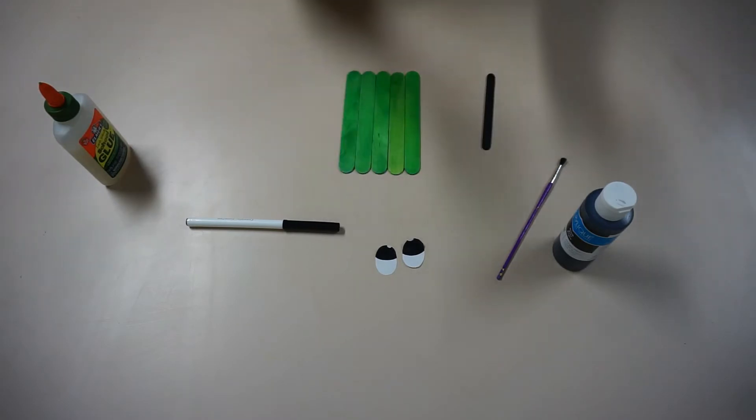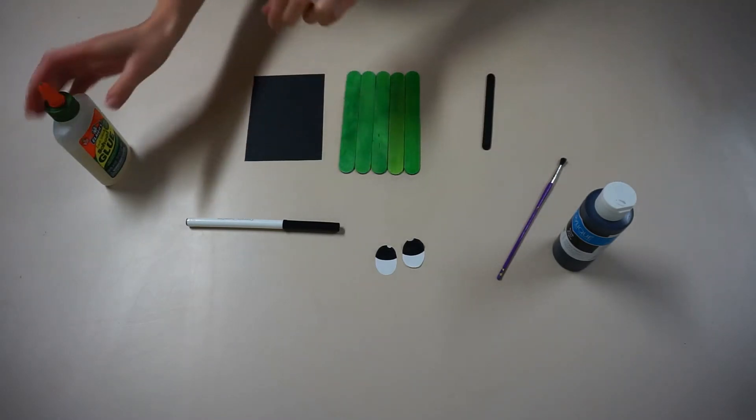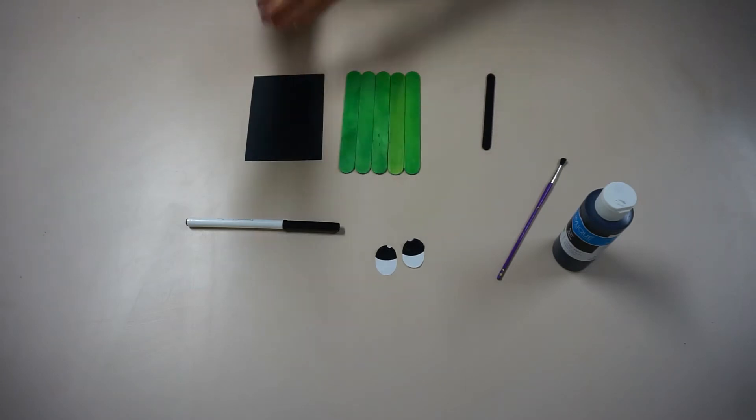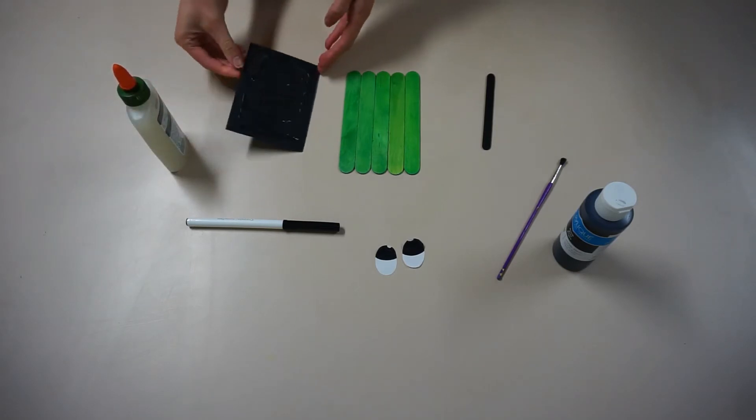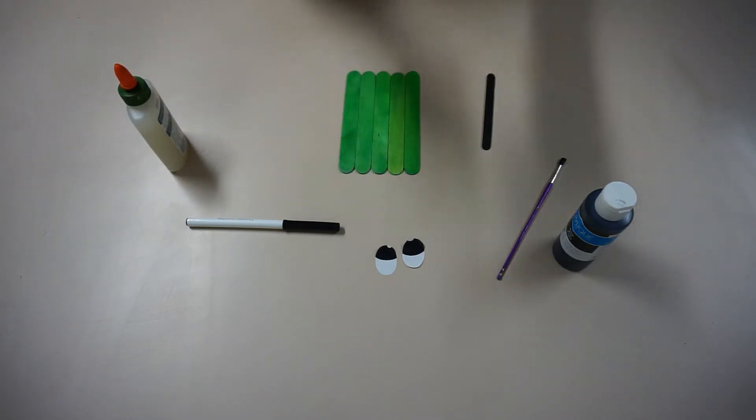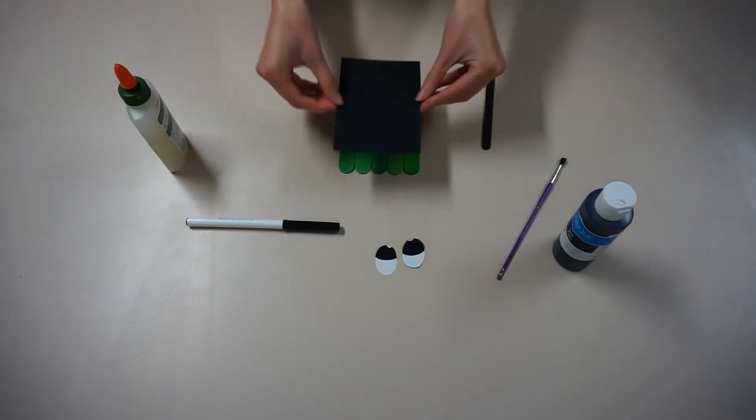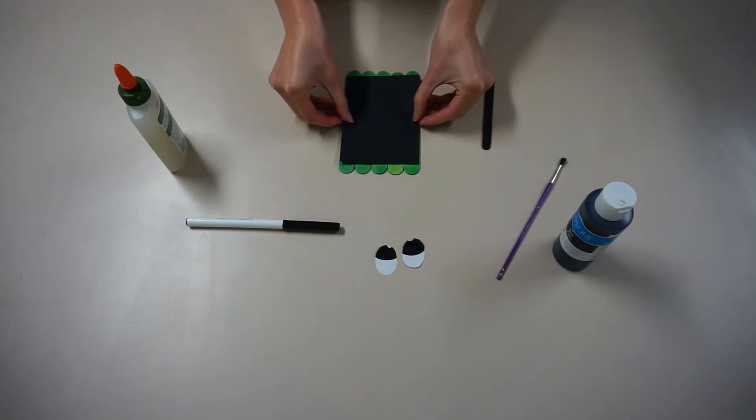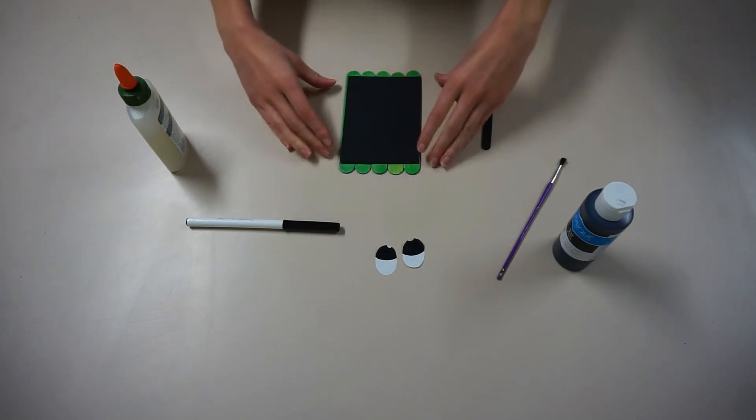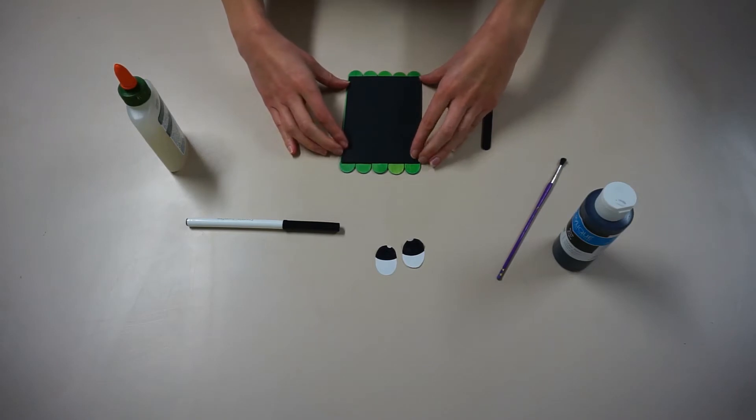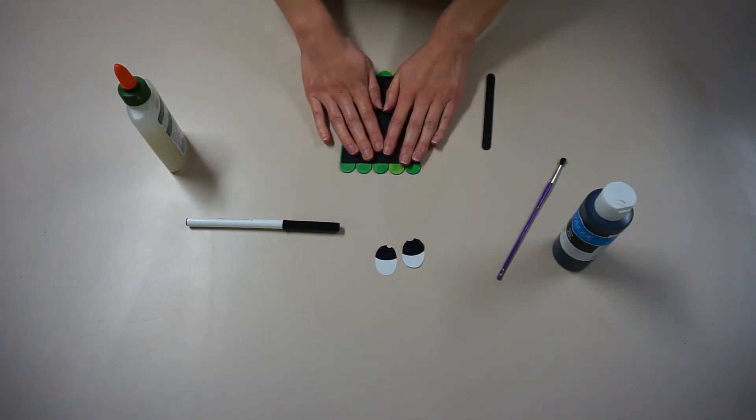Start by cutting out a piece of cardboard that will fit your popsicle sticks. Put glue all over it and then put on top of your green popsicle sticks. Make sure you push down so they're all nice and tight together.